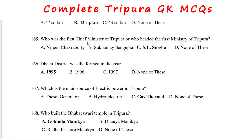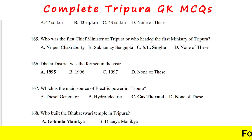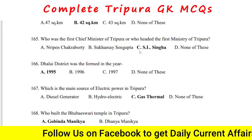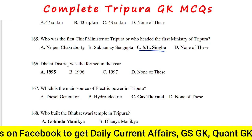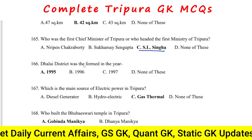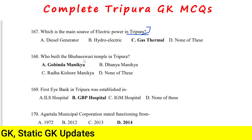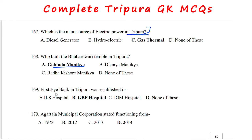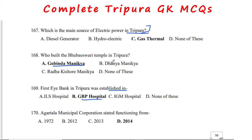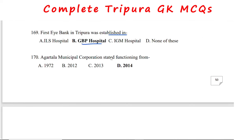The first Chief Minister of Tripura, who headed the first ministry, was Sachindra Lal Sinha. Dhalai district was formed in 1995. The Bhuvaneshari temple was built by Govindamanika. The first eye bank in Tripura was established in Govind Vallabh Pant (GB) Hospital. Agartala Municipal Corporation started functioning from 2014.